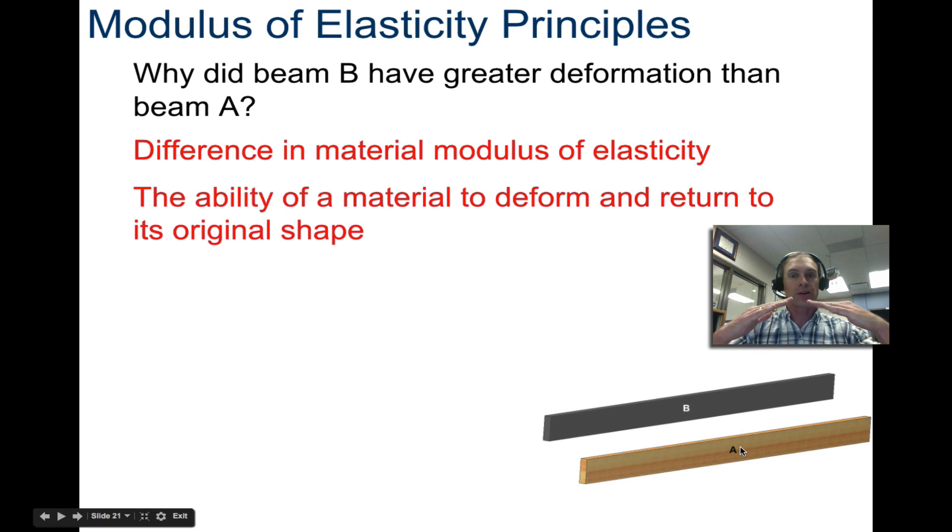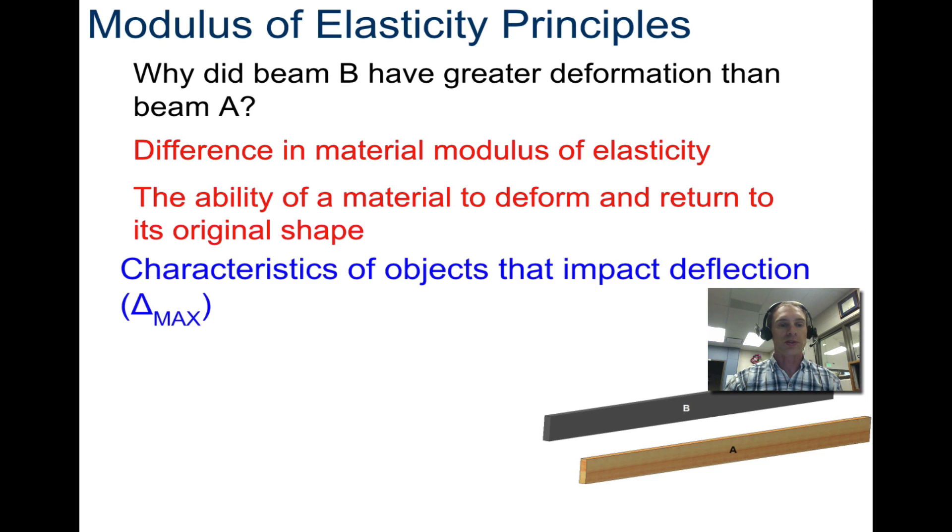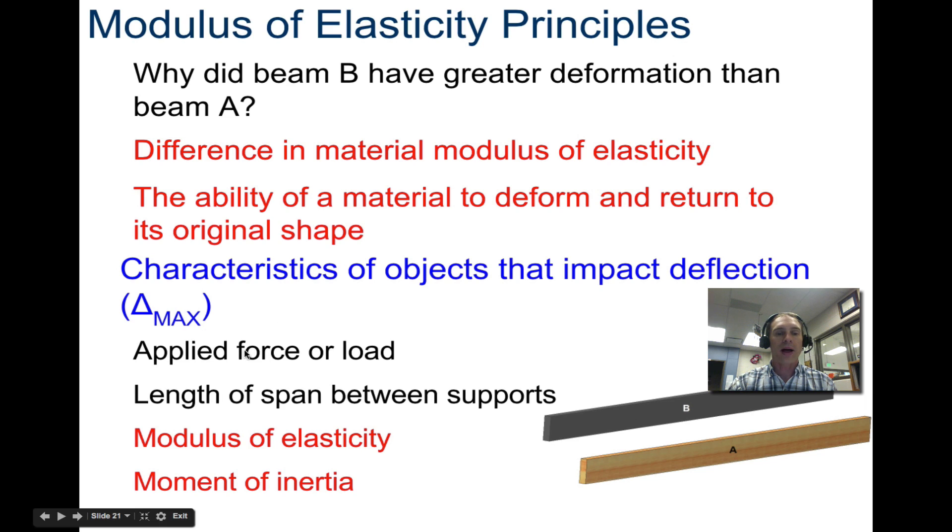The ability of material to deform and return to its original shape. You can bend a board and have it still return to its original shape. That means it's still within its elastic principles. It's not gone into plastic deformation. It's just elastic deformation. Characteristics of objects that impact deflection: applied force or load, the length of the span between supports. If I span from end to end, it's going to deflect a lot more than if I span from just right here to right here on that wooden beam. That also affects the deflection. The modulus of elasticity affects it, and so does the second moment of inertia.